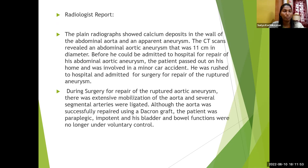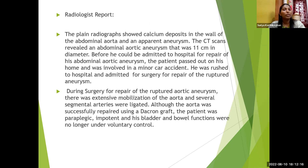The plain X-ray showed calcium deposits in the wall of the abdominal aorta. So it is something related to aneurysm — likely an abdominal aortic aneurysm. In X-rays, calcium deposits can be picked up. To confirm the diagnosis, a CT scan was also done. The CT scan revealed an abdominal aortic aneurysm that was around 11 centimeters in diameter.